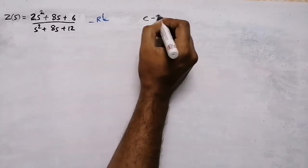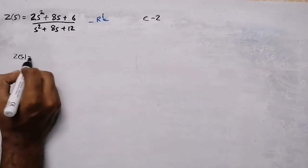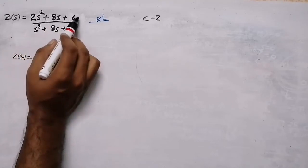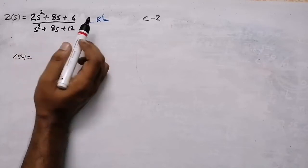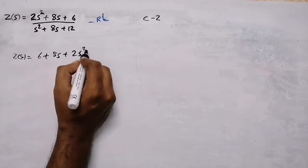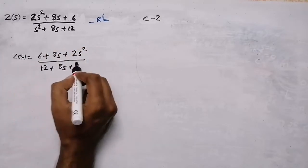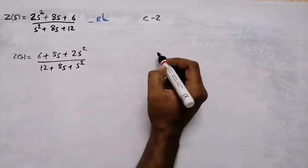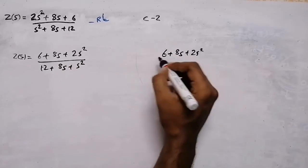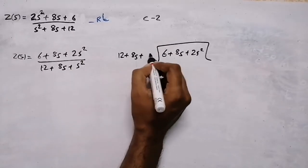Now we find the Cauer 2 network. The first step is to arrange the impedance function in ascending order of powers of s. The numerator becomes 32 + 12s + s², rewritten as: 32 + 12s + s² over 12 + 8s + s². Now perform long division on this rearranged form.